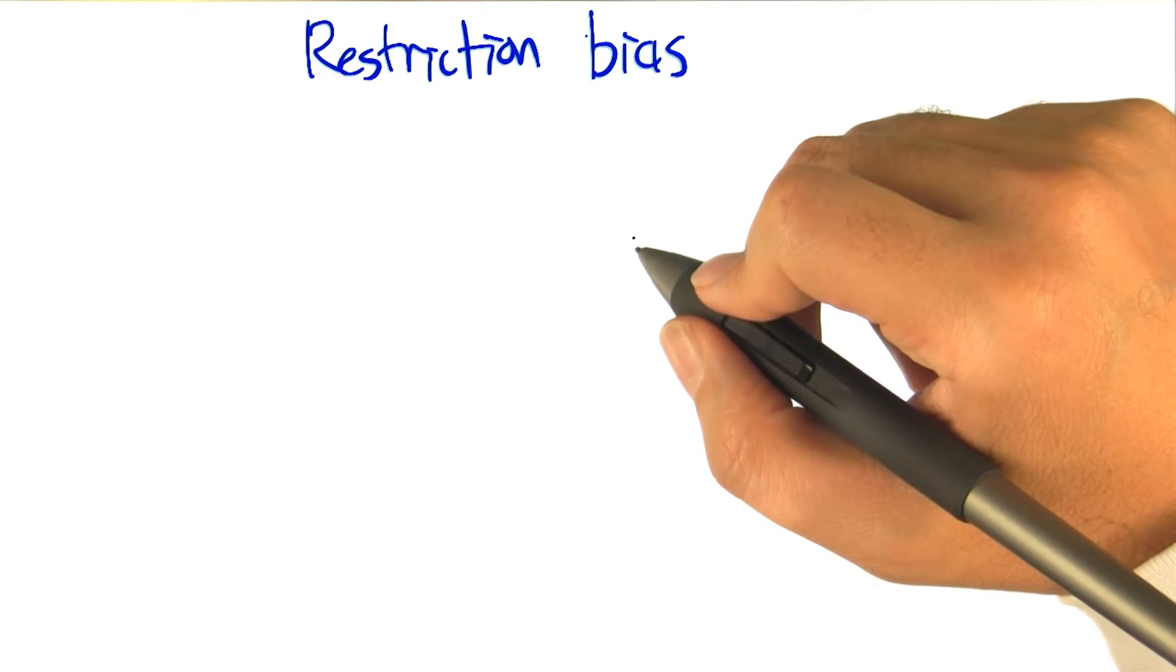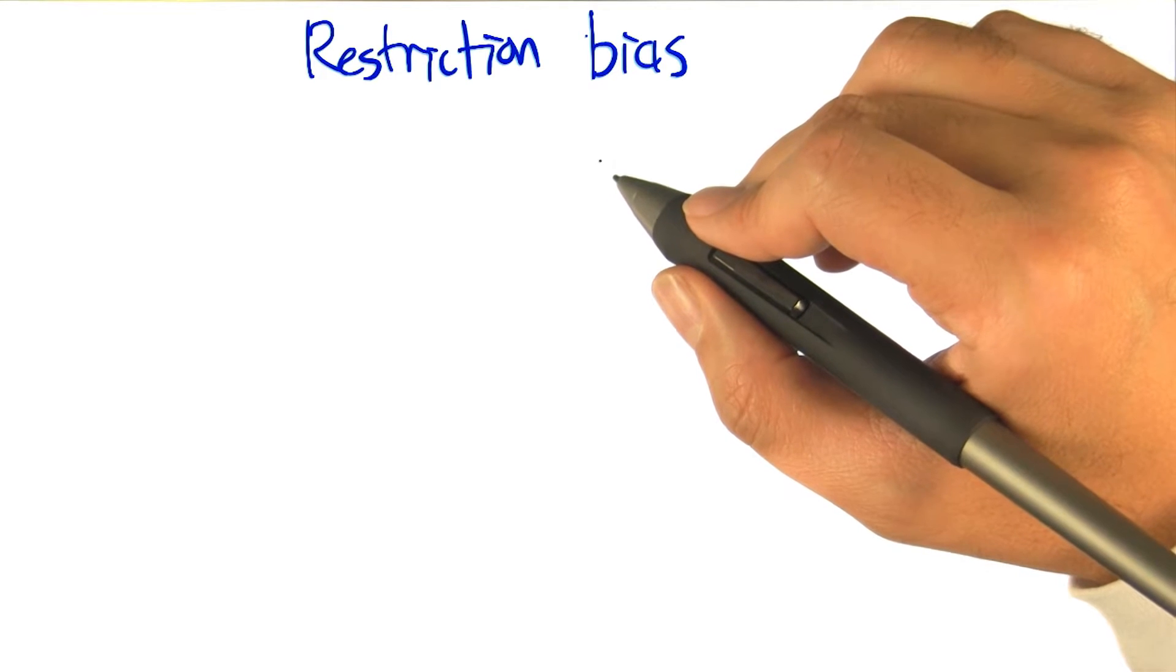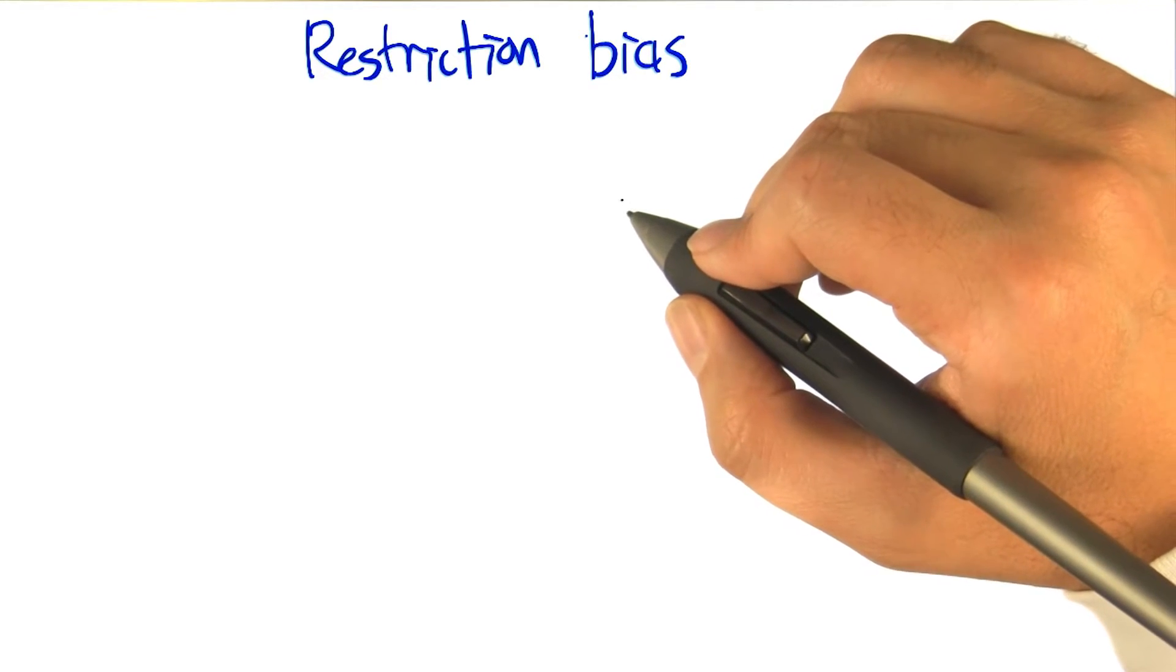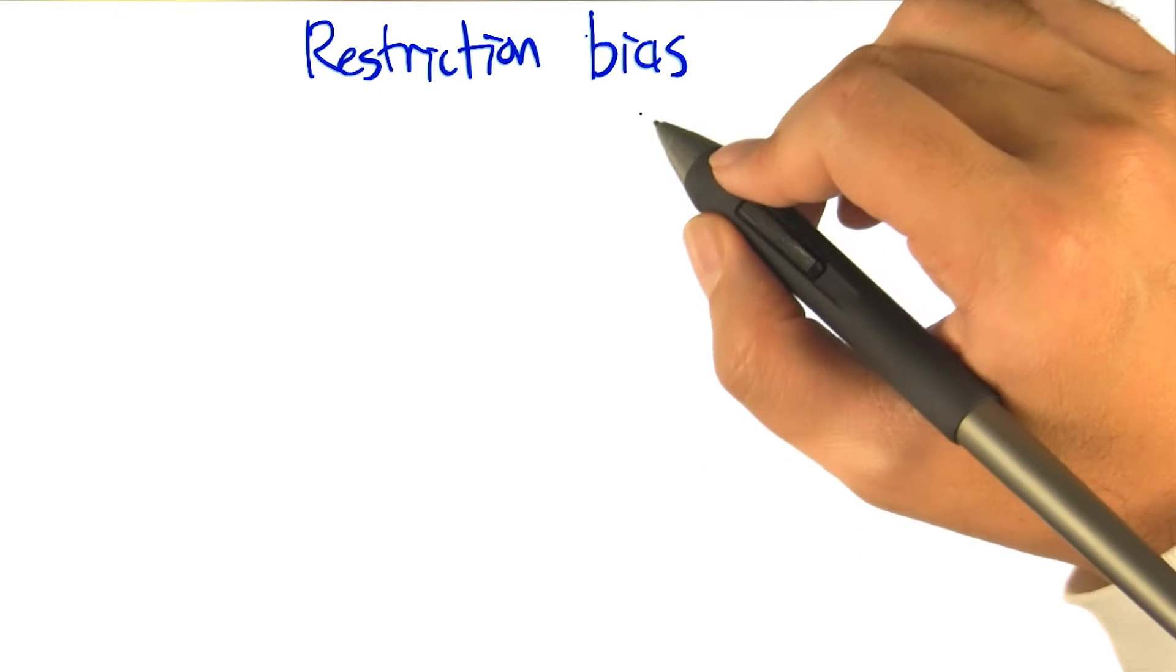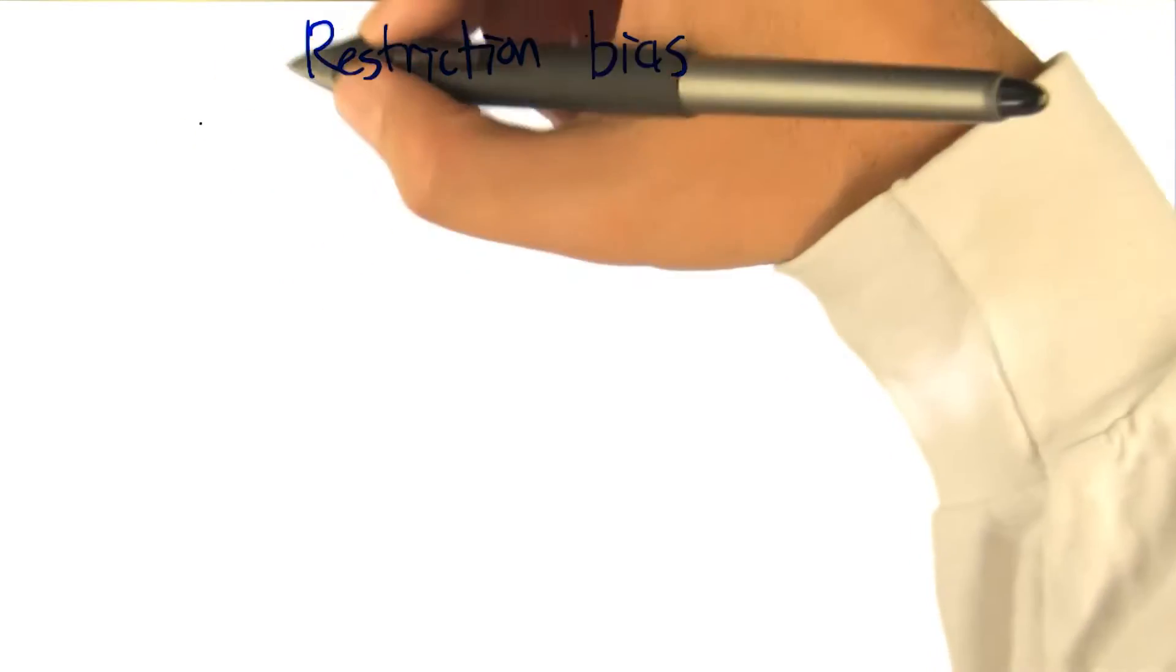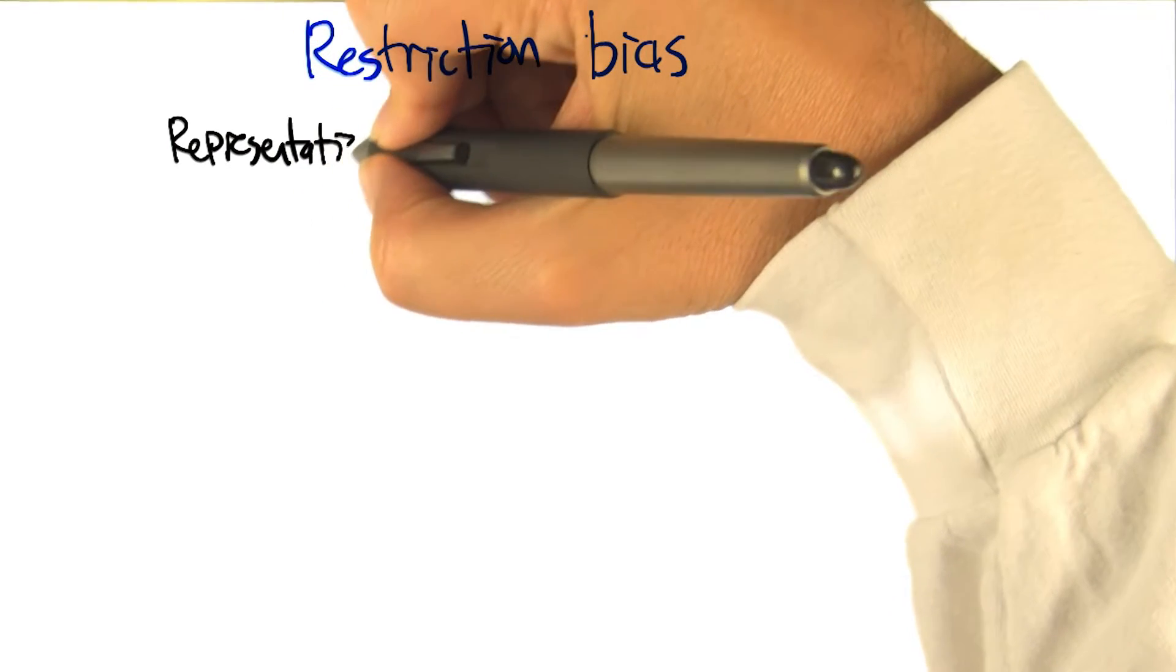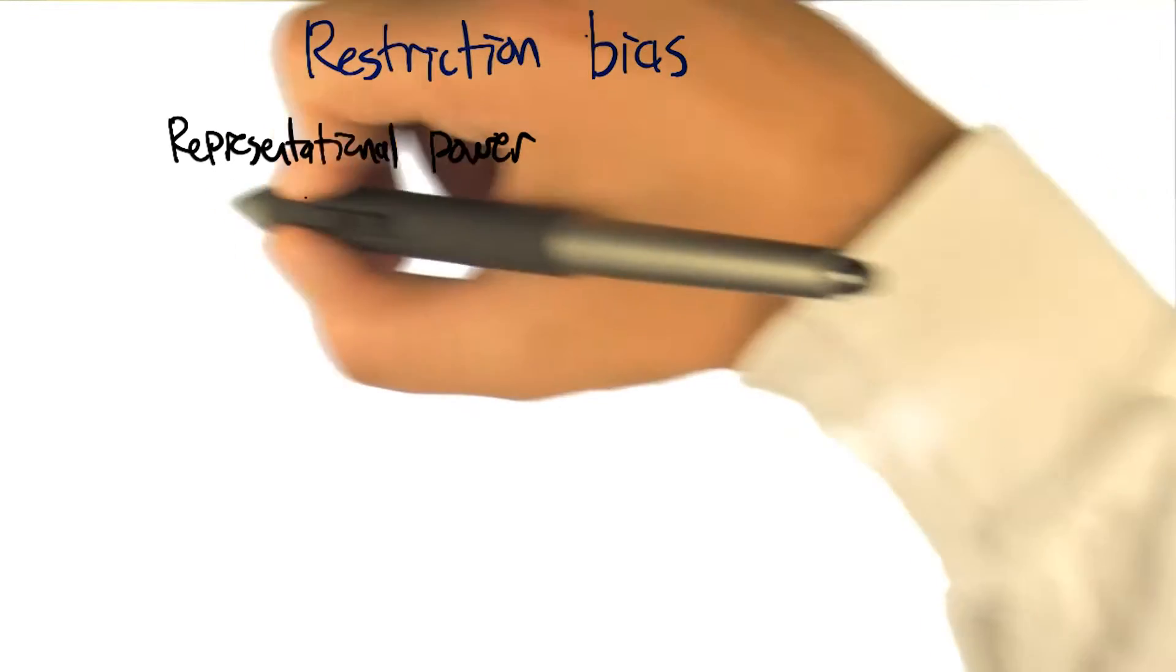So this brings up the issue of what neural nets are more or less appropriate for. What is the restriction bias and the inductive bias of this class of classifiers and regression algorithms? So Charles, can you remind us what restriction bias is? Well, restriction bias tells you something about the representational power of whatever data structure you're using. So in this case, the network of neurons. And it tells you the set of hypotheses that you're willing to consider.